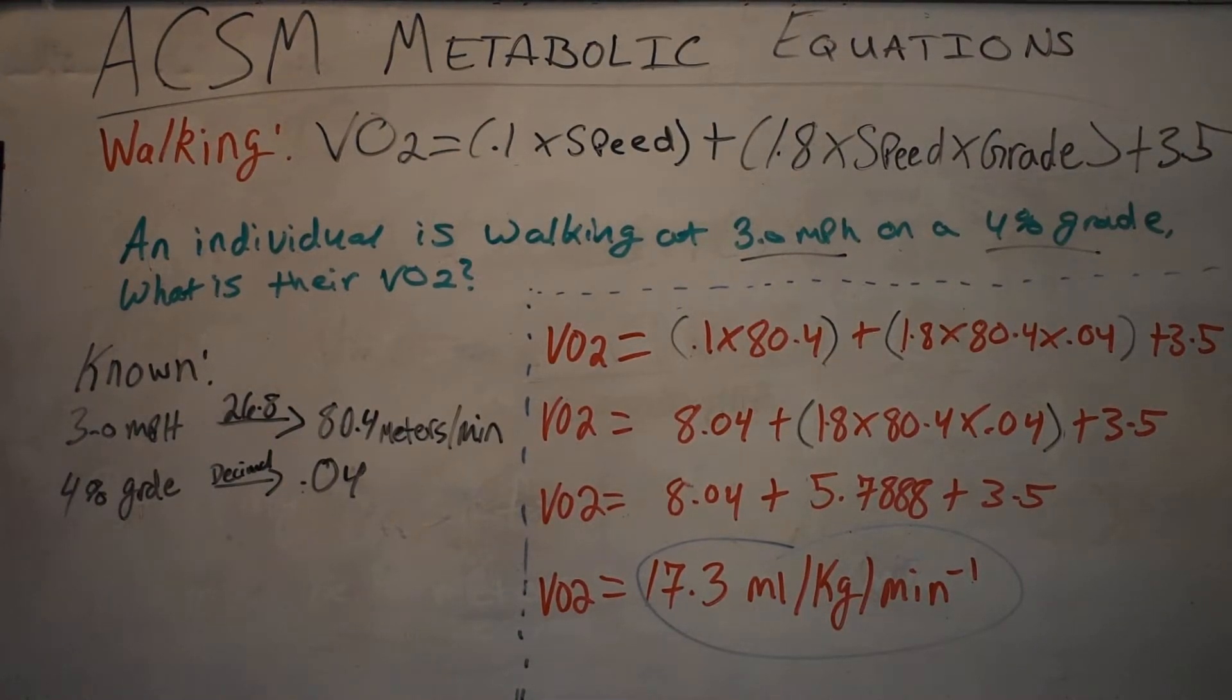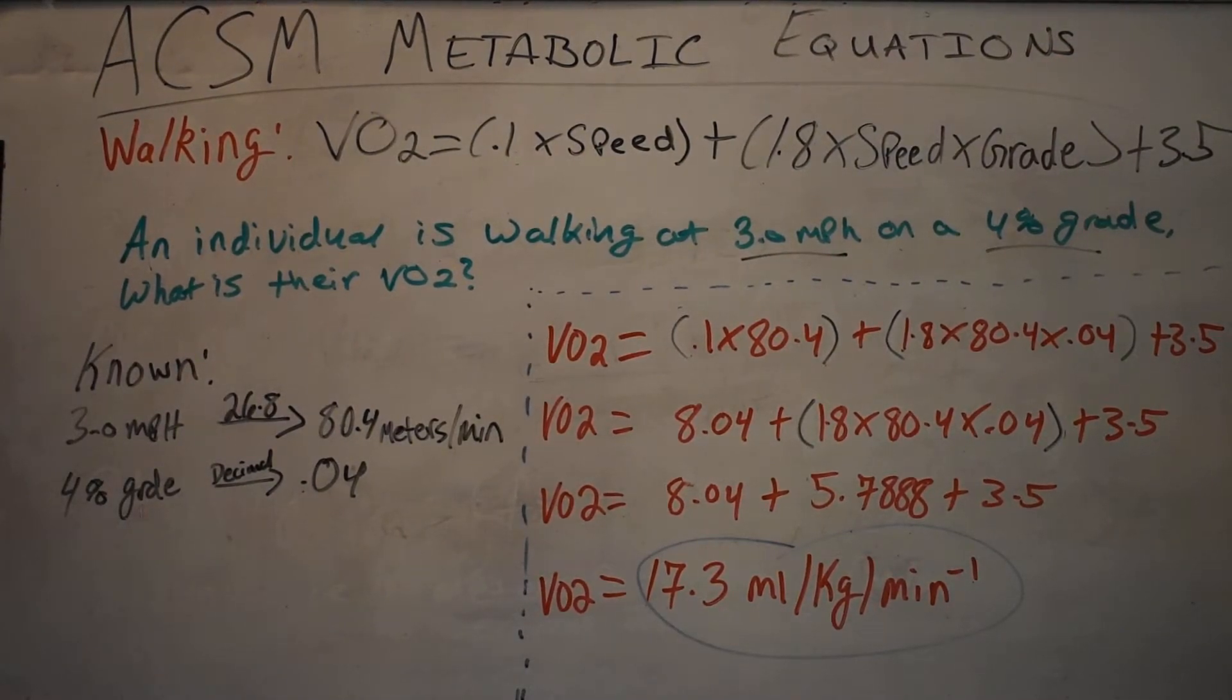In this example, I'm presenting an individual who's walking on a treadmill at 3 miles an hour on a 4% grade. What is their VO2?